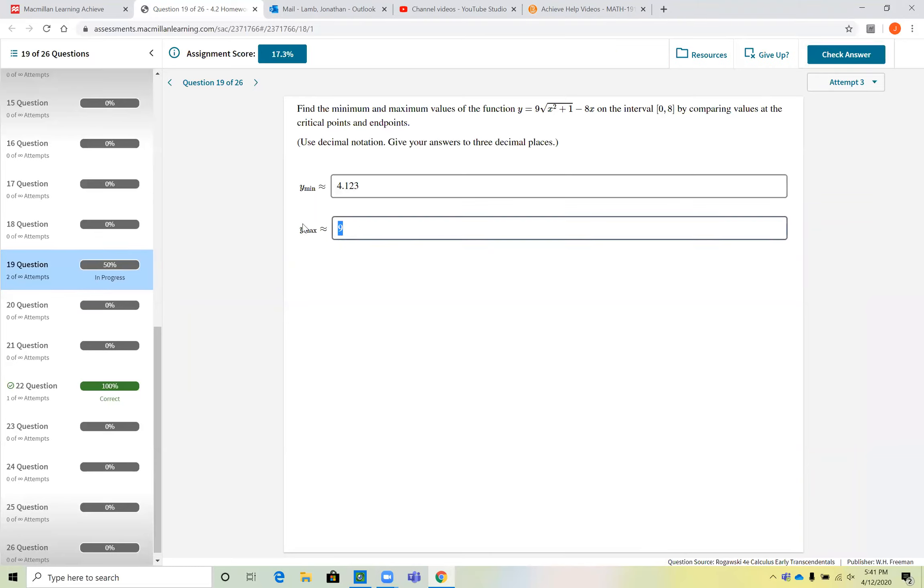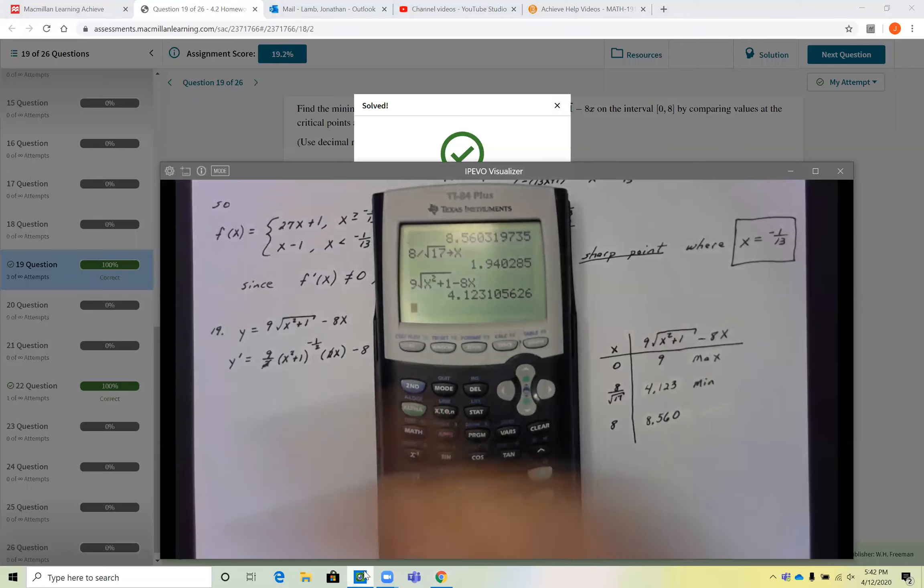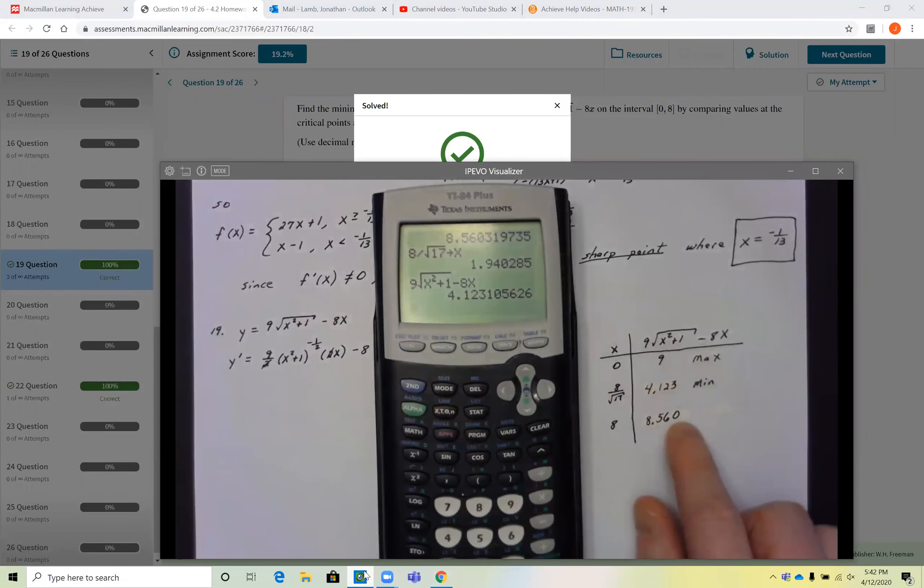But if I put in 8.560, watch it give me credit for it. It's going to say, hey, you got it right. That's not good. So I will ask for this question to be corrected. In the meantime, you could either ask me to correct it for you with the correct maximum in here of the left hand endpoint or just wait for the correction to come from the Achieve staff one way or the other. We'll get it for you. Excellent question. Please let me know if you have any others. I'm glad to help.